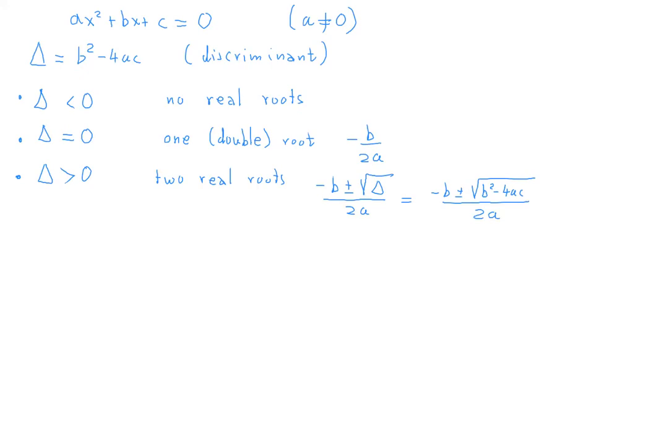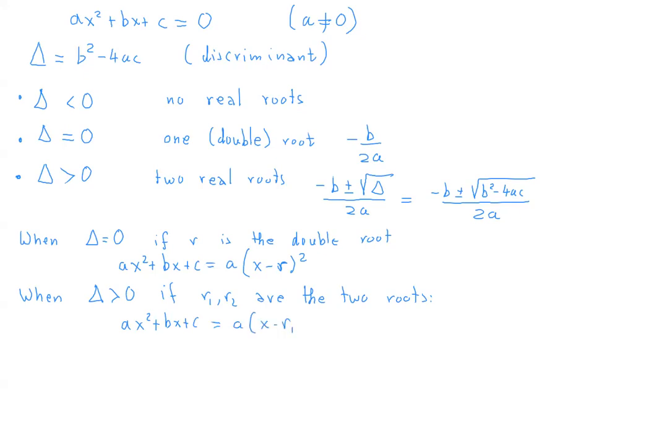And let me just say that when delta is equal to zero, if R is the double root, meaning negative B over two A, then there is a very nice way of factorizing the polynomial. So in this case, AX squared plus BX plus C can be written as A times X minus R squared. And when delta is greater than zero, if R1 and R2 are the two roots, then again, we have a very nice factorization: AX squared plus BX plus C is equal to A times X minus R1 times X minus R2.